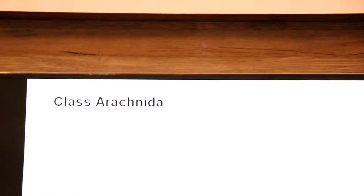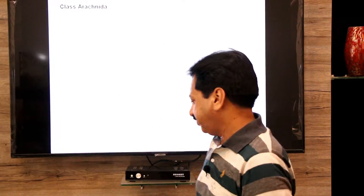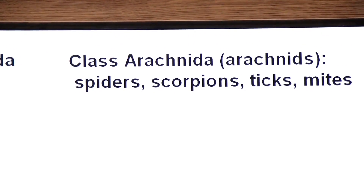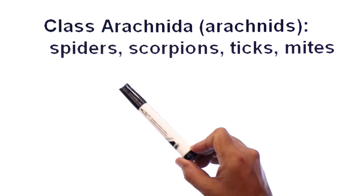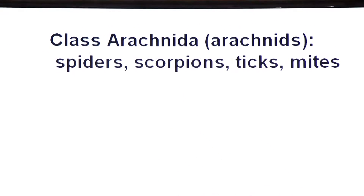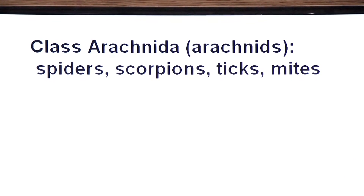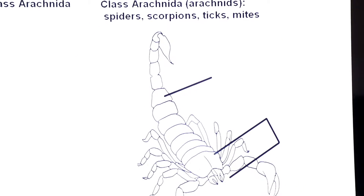Now we move to the second class: class Arachnida. This class includes spiders, scorpions, ticks, and mites. Look at the diagram of the scorpion. Body division: the body is divided into two parts — cephalothorax and abdomen.